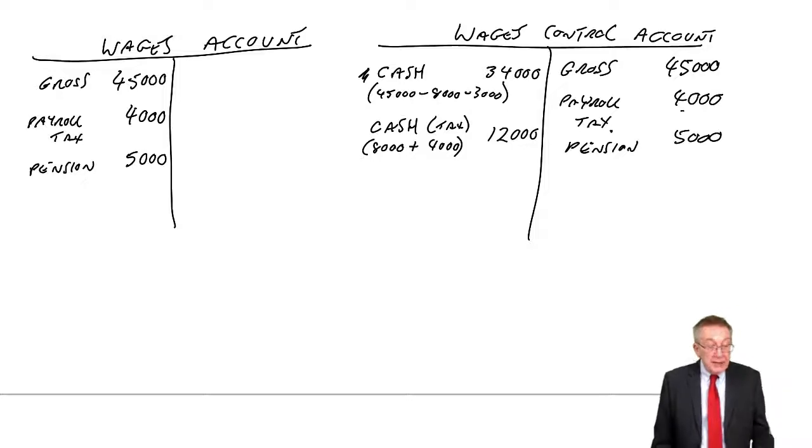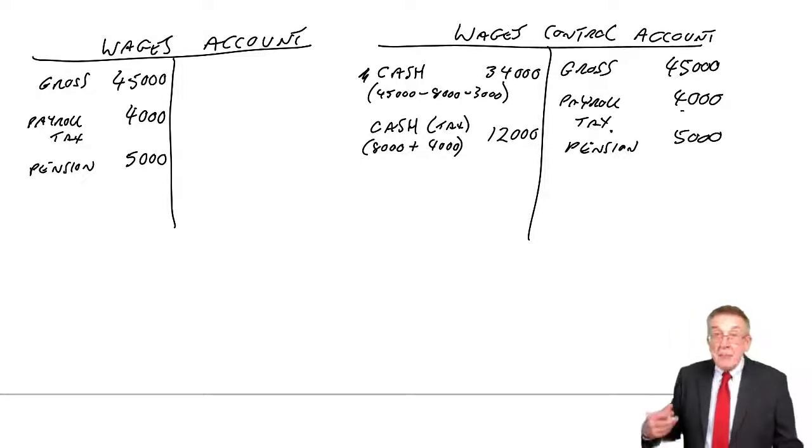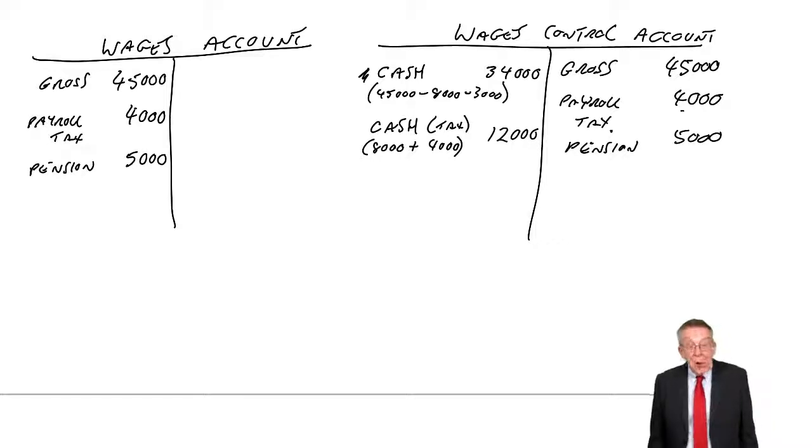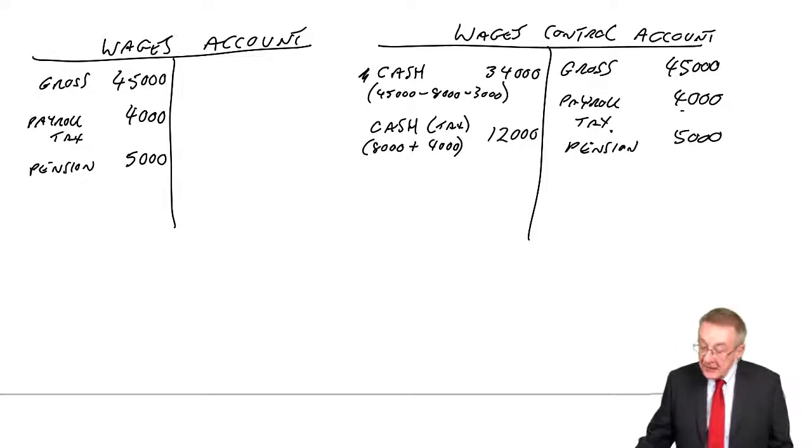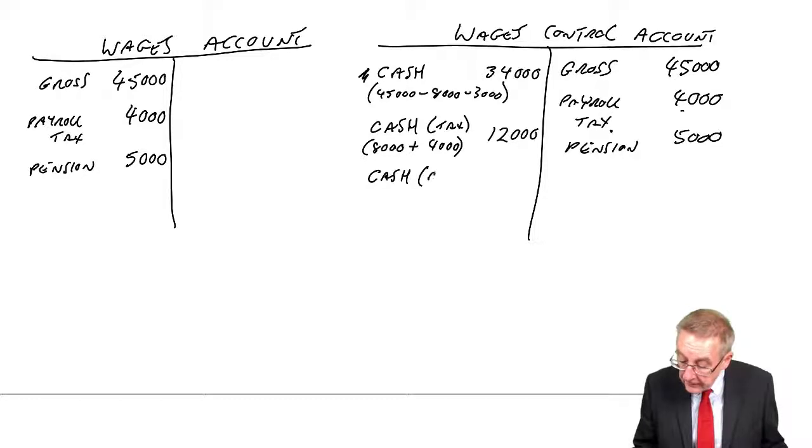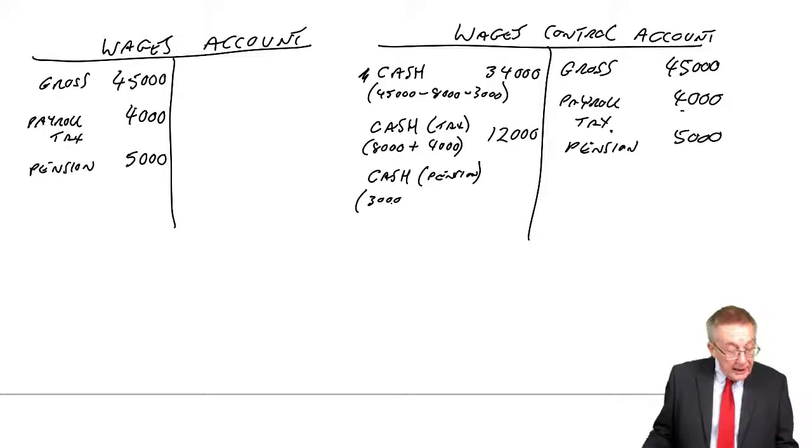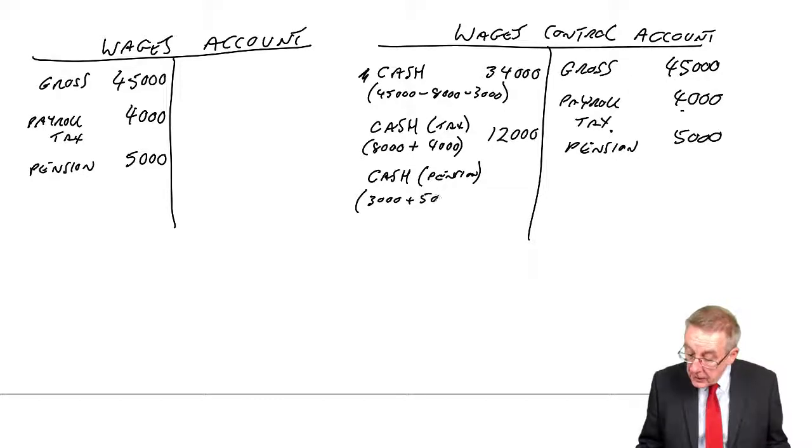Now finally, on the 20th of April, the pensions people are paid the amounts due. And how much is owed to the pension people? From the employee, we took off $3,000 in note 1. In addition, in note 2, the employer has to pay $5,000. So the cash to the pension people, credit cash, debit wages control. Taken from the employee was $3,000, which we now have to pay over. Company themselves owe $5,000. So a total of $8,000.